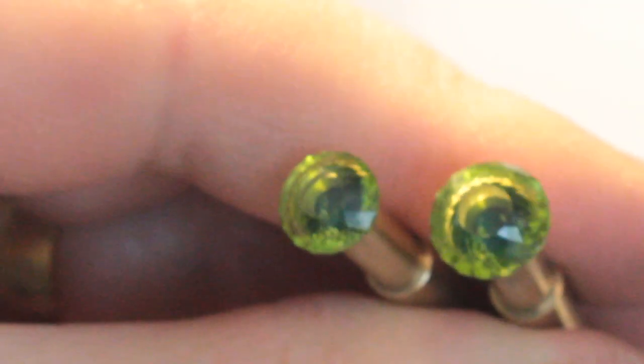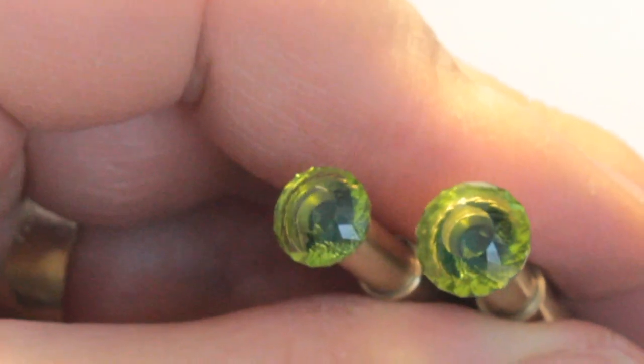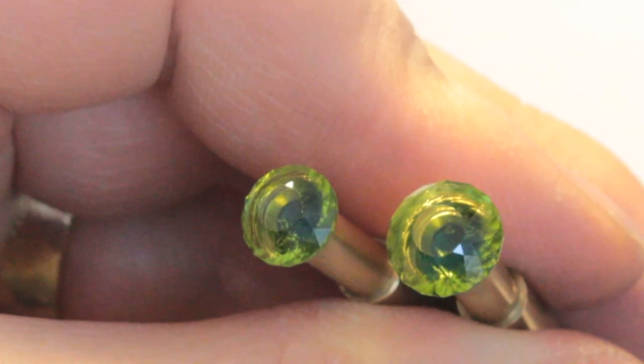I finished polishing the table of our two peridot. So now I'll put it in acetone and remove the stones from the dop. Then we'll take a final look at these stones and weigh them and measure them.